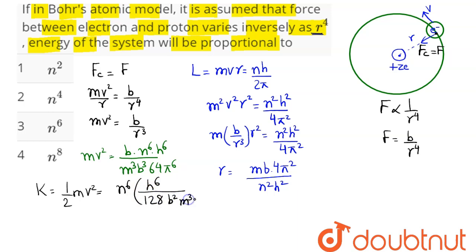We just need to find the proportionality, so energy of the system proportional to n raised to power 6. That is option number 3 is the correct answer, n power 6. Hence 3 is our answer.